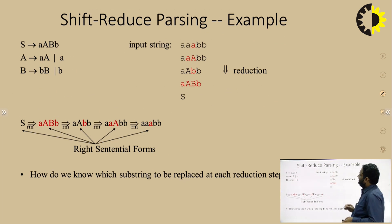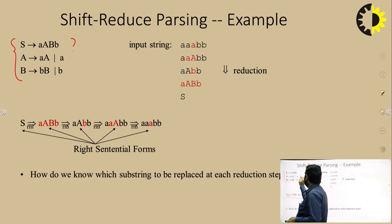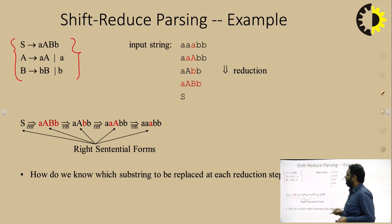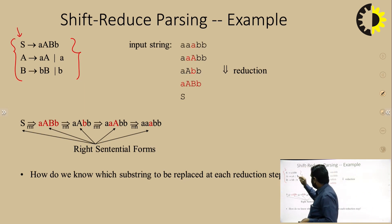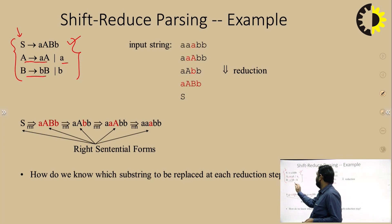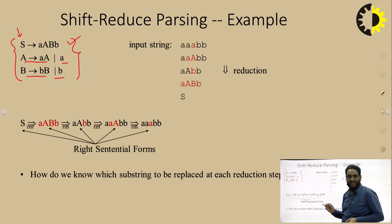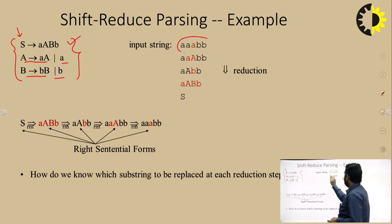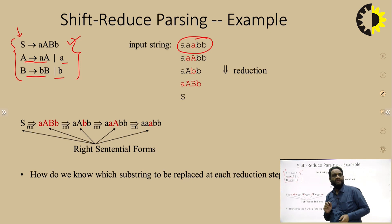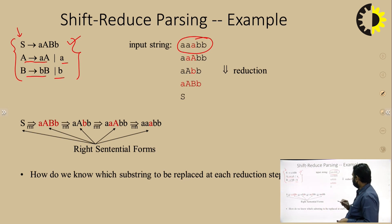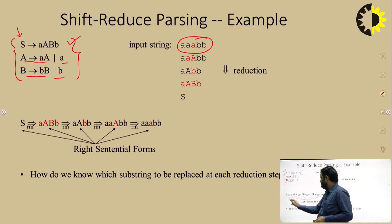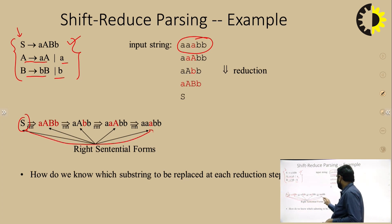Let's take a simple grammar. This grammar has five production rules, where S is the start symbol. Suppose we have the input string A, A, B, B. You can see how this starting symbol is converted into the given string. First, S is converted to small-a, capital-A, capital-B, small-b using the first production rule. Then, using rightmost derivation, the rightmost non-terminal B is converted to small-b using the fifth production rule.